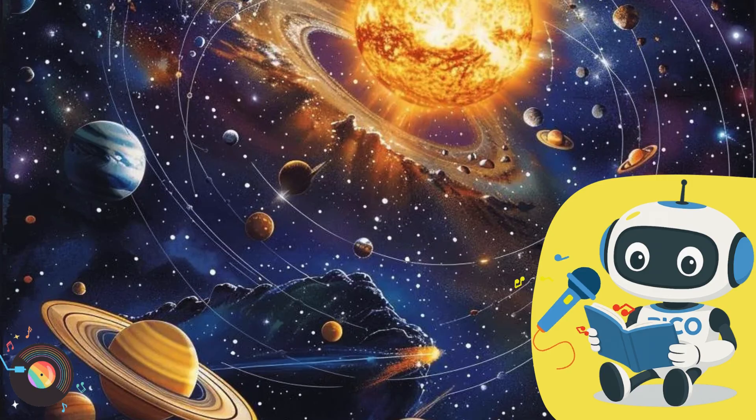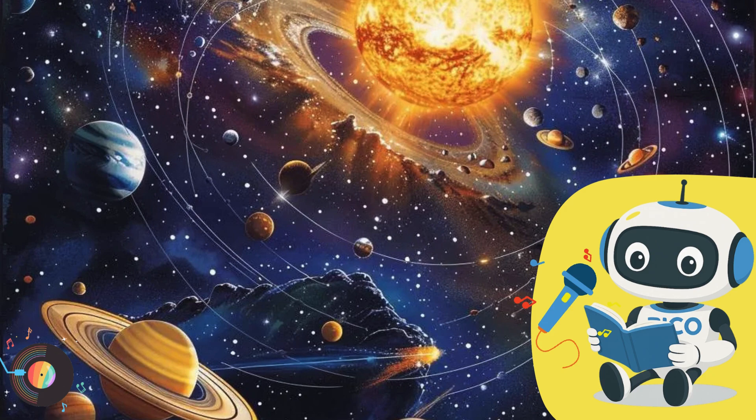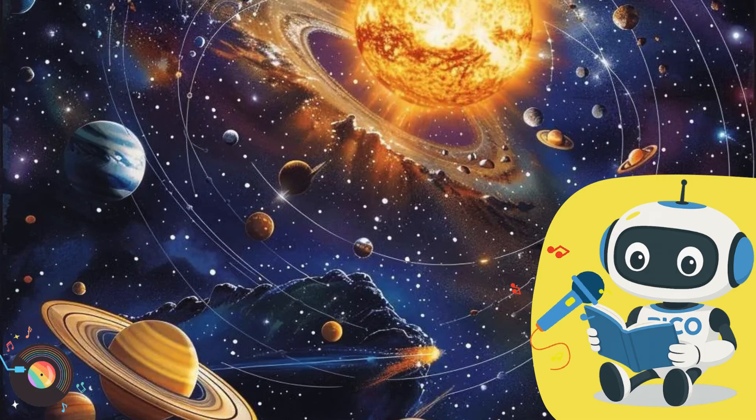Next stop, the asteroid belt, said Zara, double-checking their flight path. Keep an eye out for any surprises. As they approached the swirling ring of rocky debris, the ship's sensors began to beep. Zara and Leo exchanged a glance. Something big is out there, said Leo.